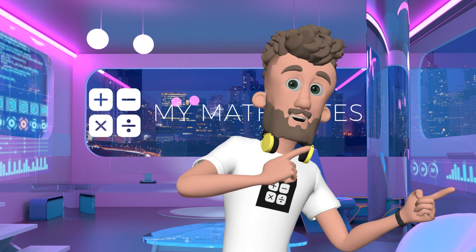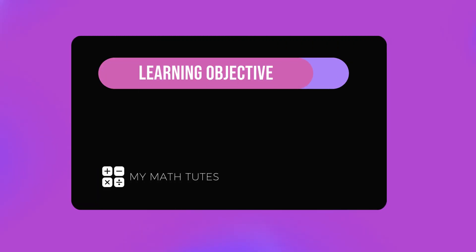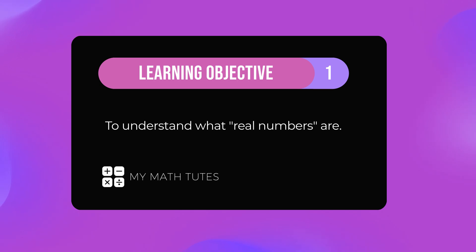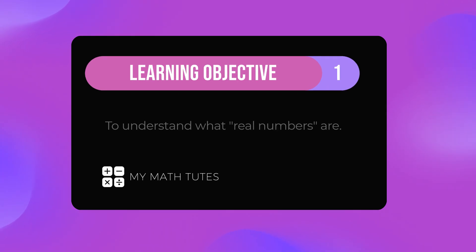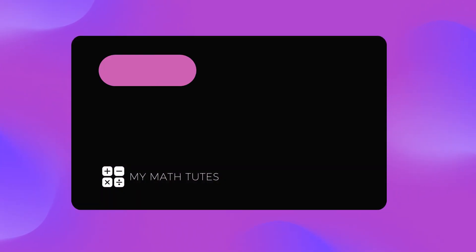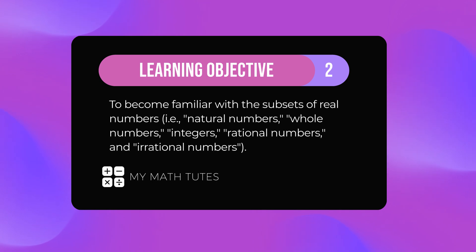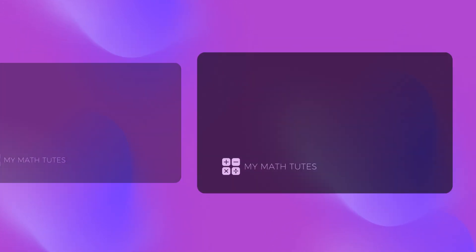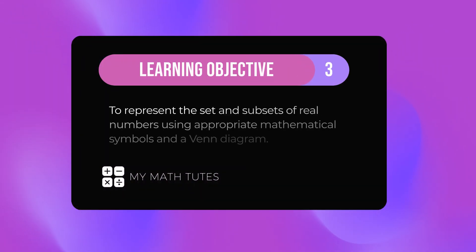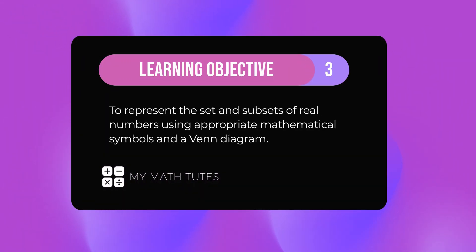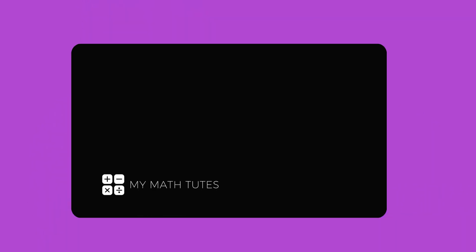The specific learning objectives are as follows. One, to understand what real numbers are. Two, to become familiar with the subsets of real numbers — that is natural numbers, whole numbers, integers, rational numbers and irrational numbers. And three, to represent the set and subsets of real numbers using appropriate mathematical symbols and a Venn diagram.